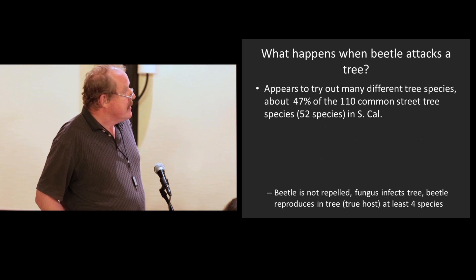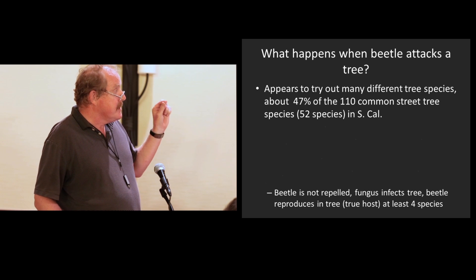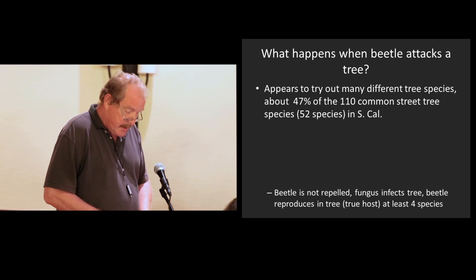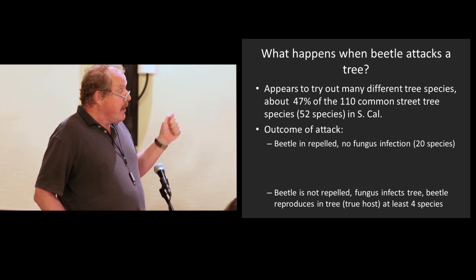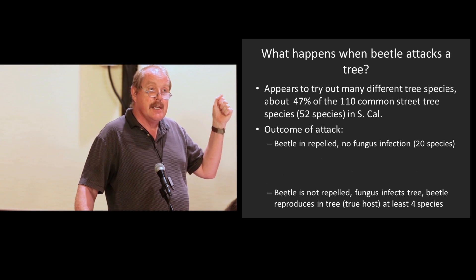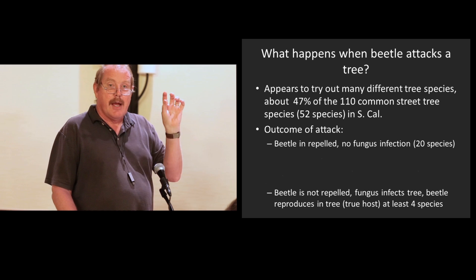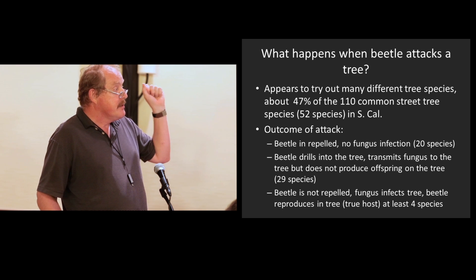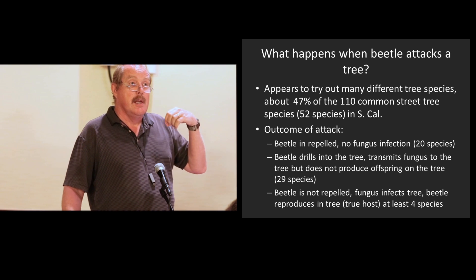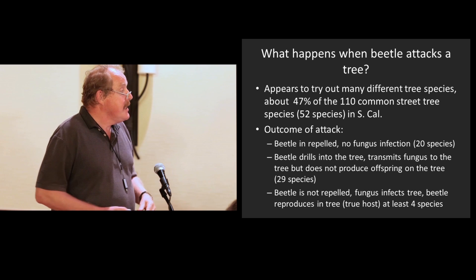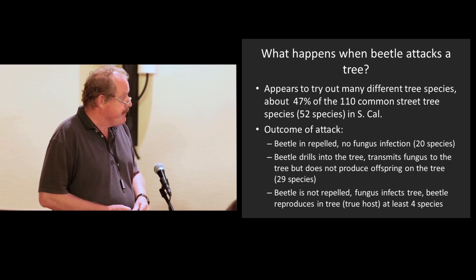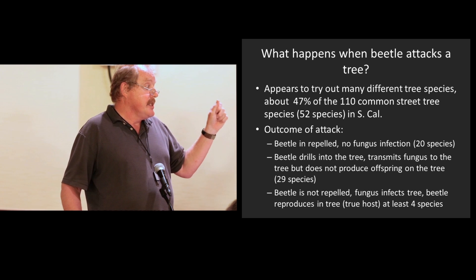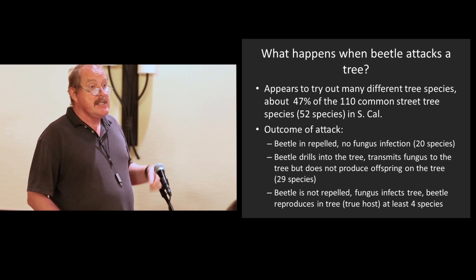What happens when the beetle attacks a tree? It appears to try out many different tree species. About 47% of the 110 common tree species in Southern California, the beetle will go to, drill into it. And the outcome of that attack is that the beetle is repelled and no fungus infection takes place in 20 species. So the beetle goes there, chews on it. Somehow it doesn't go in there. The fungus doesn't get in there. So no problem. Or, the beetle drills into the tree, transmits the fungus to the tree, but does not reproduce on the tree. So it doesn't produce any new beetles on that tree. And we find that in 29 species of the 52. And the beetle, in the third case, the beetle is not repelled. The fungus infects the tree and the beetle reproduces in the tree. So it's a true host. And we found at least four species of trees that are true hosts.